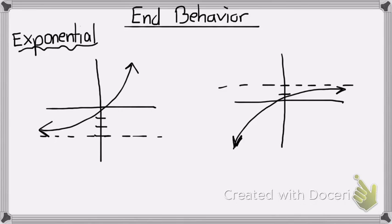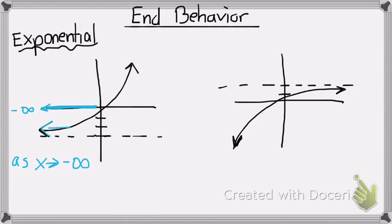Look at this first example on the left side. My x values on this side are always going to go to negative infinity. So, as my x values are approaching negative infinity, I'm going to look to see what my y values are doing — is it going up or down? Is the arrow going up or down? Well, it's getting really close to that asymptote, so my y is going to keep approaching the asymptote, which is at negative 3.